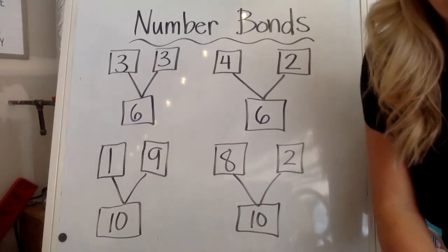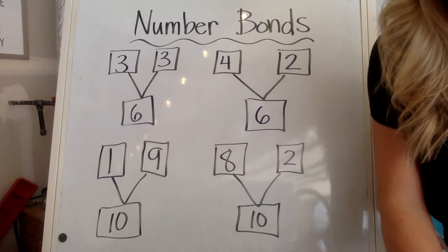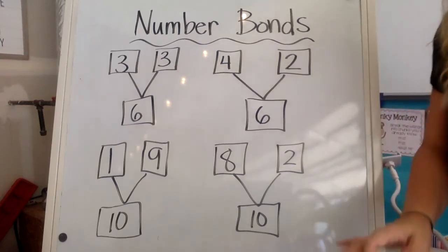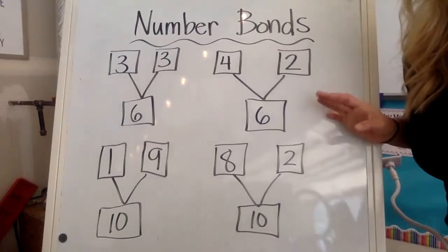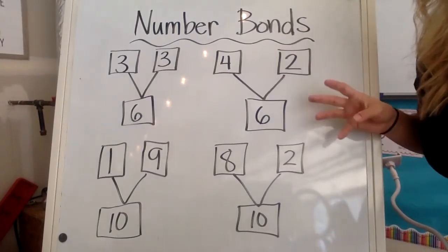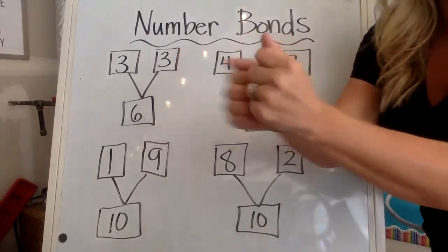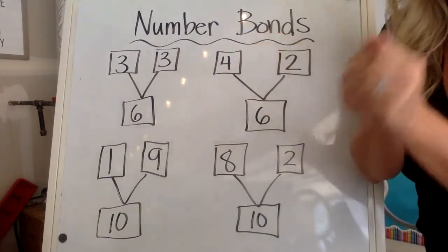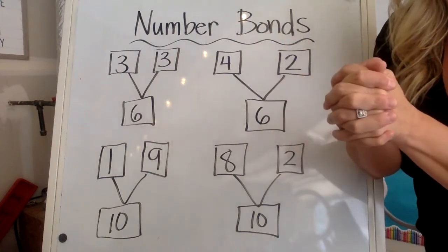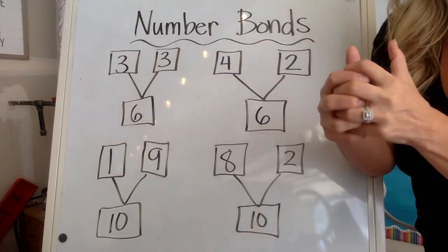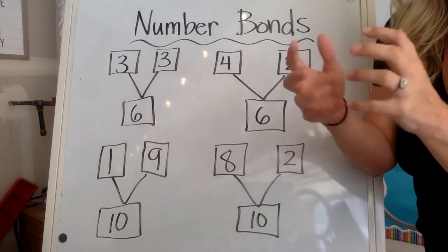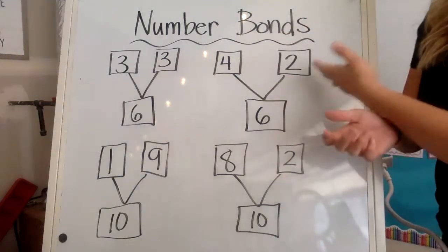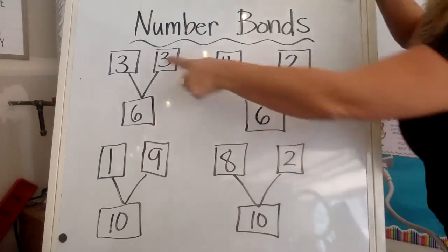Hi everybody, I'm back with some math. We are going to jump into lesson three, session one in a second, but before we do I wanted to review number bonds with you. A bond is something that brings you together, like you and your family — you are bonded together. So these number bonds are partners; that's another way of describing it. They come together and they make a number.